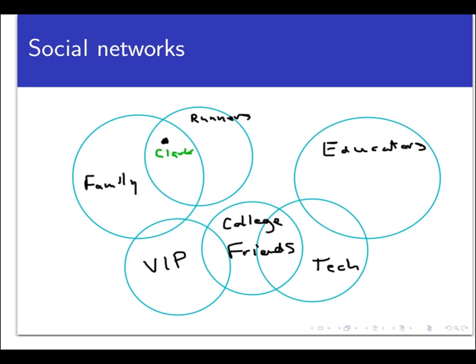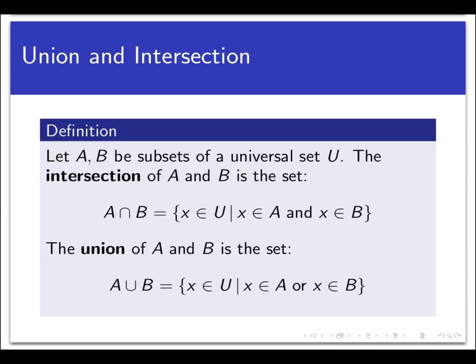Now a group on my social network is a kind of set, and putting those sets together in certain ways is what we want to understand by looking at certain operations that we perform on sets. Just like addition and multiplication are operations that we perform on numbers, where we take one or two numbers and combine them to produce a third number, sets have operations too that take one or two sets and produce a new set as output.